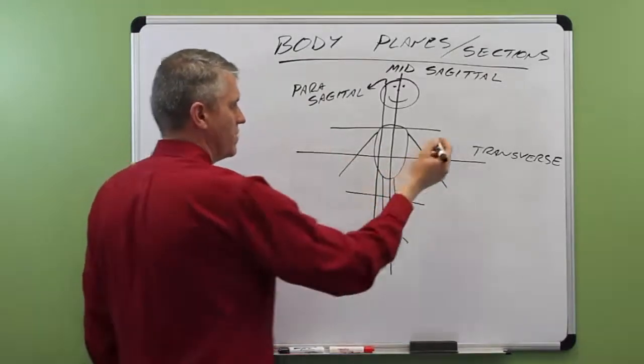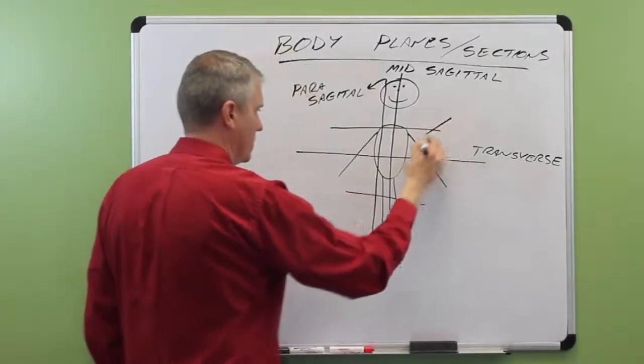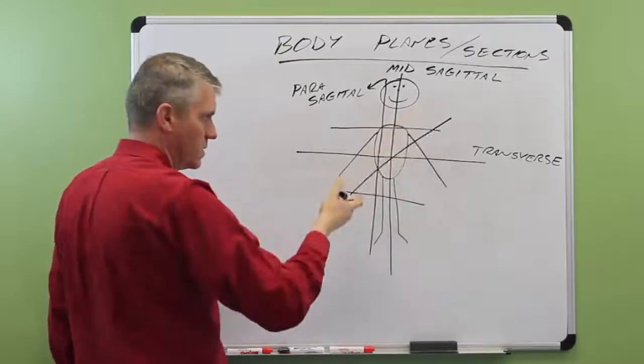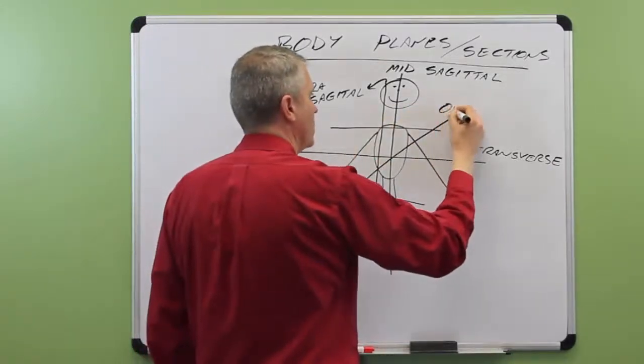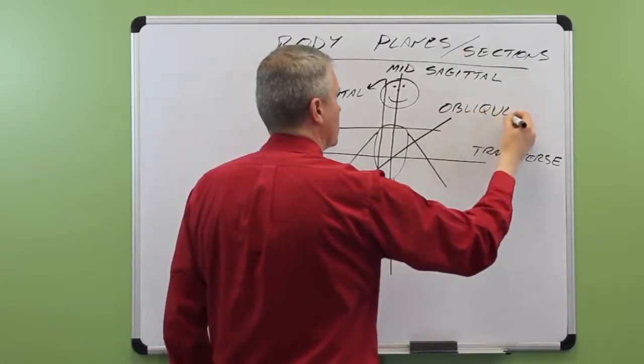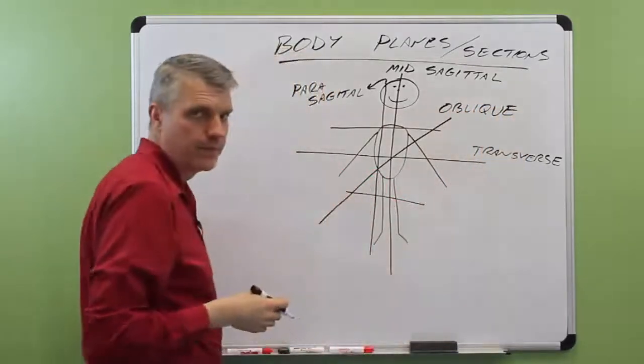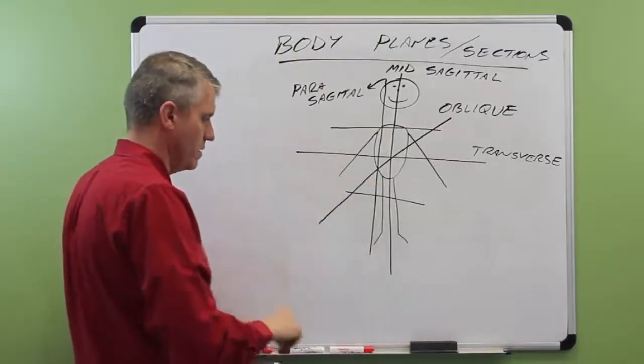The last one I'll do with him facing forward like this, because it doesn't matter which way he's facing for this one. Any diagonal section or diagonal plane through the body is going to be an oblique plane or oblique section. Those are all the sections I can do with him facing forward.